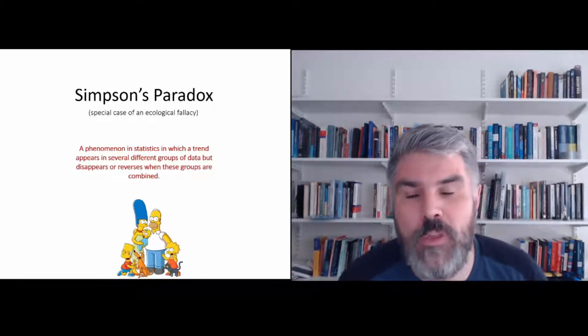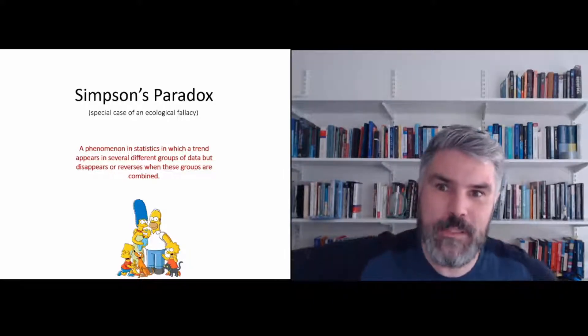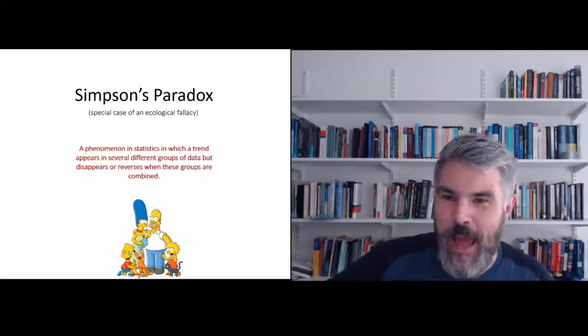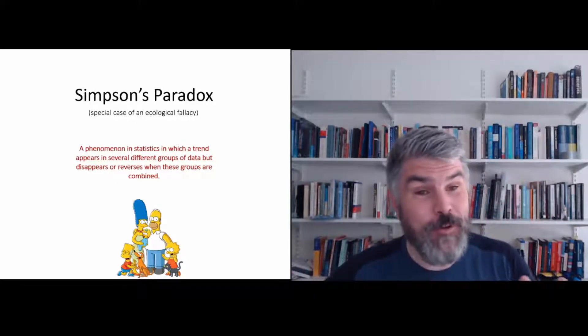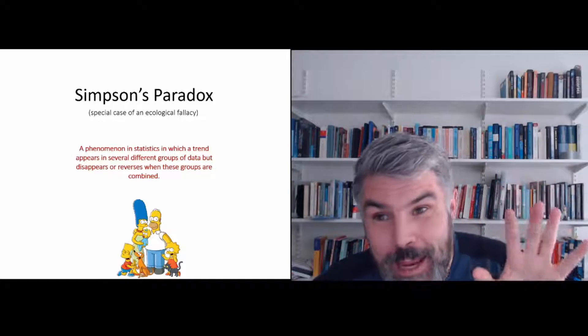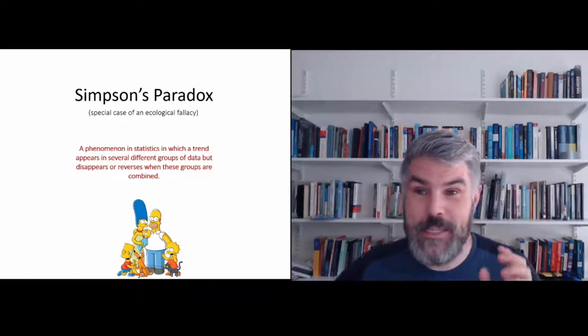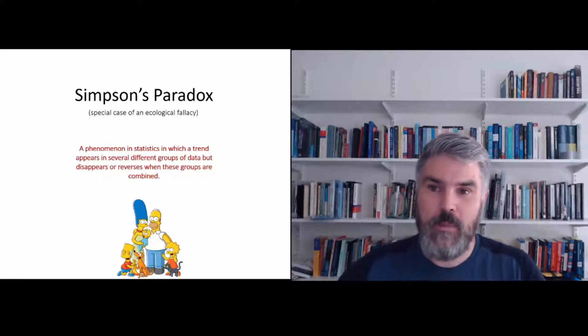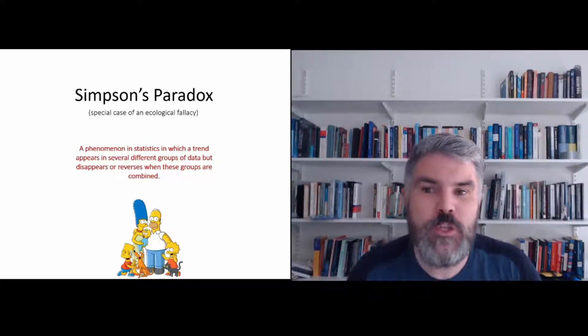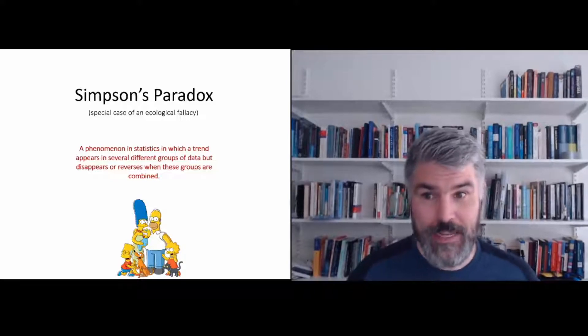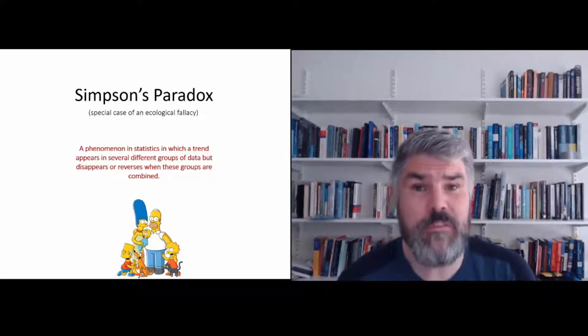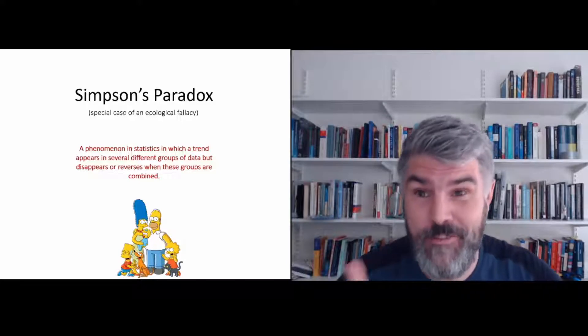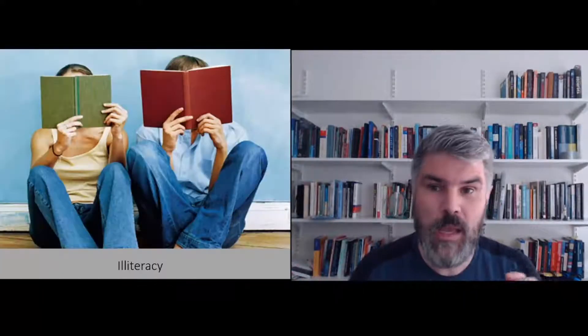A special case of the ecological fallacy is what we call Simpson's paradox. And this one is not named after the Simpsons, but it is named after Edward Simpson, a statistician. It's a phenomena in statistics in which a trend appears in several different groups of data, but the trend disappears or even reverses when these groups are combined. And that can have far reaching implications.